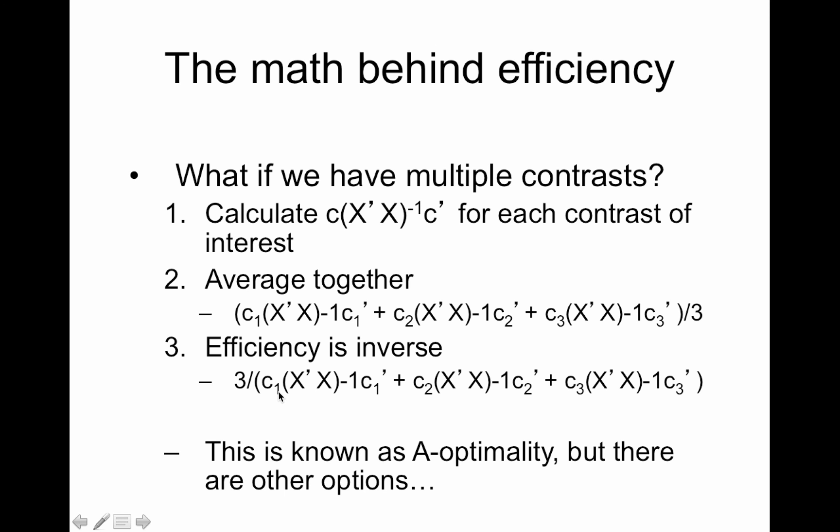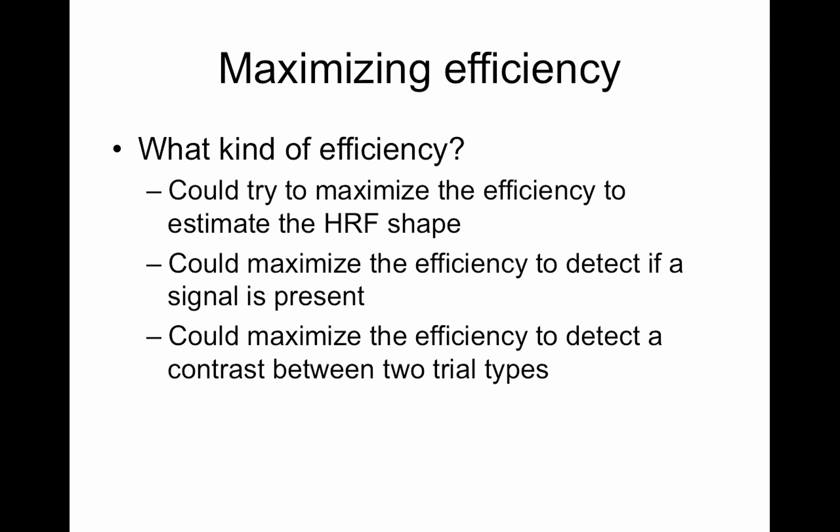This is known as A optimality, but there are other options. So there's a paper, I'm forgetting the first author, but I know it was somebody who worked with Nicole Lazar. And it had a really cool paper, and it went through all the different A optimality and I think there's one called D optimality for different ways to optimize your study design. And a cool thing about the approach that they worked on was I think they also took into consideration different psychological aspects about the stimuli. Anyway, we'll get there. I have some examples about that work later.